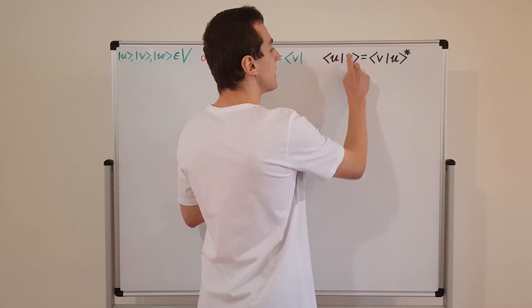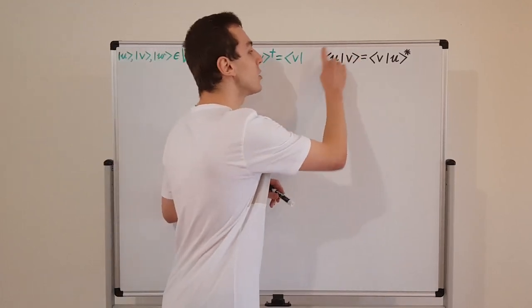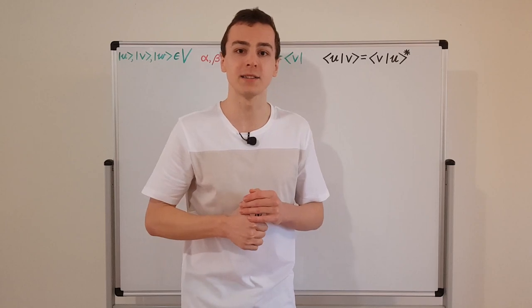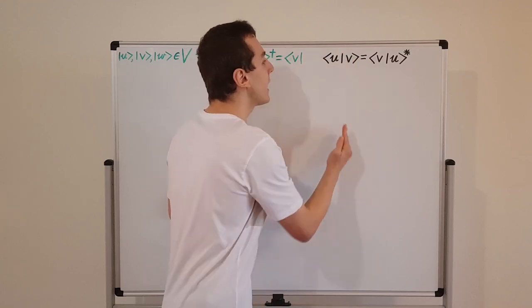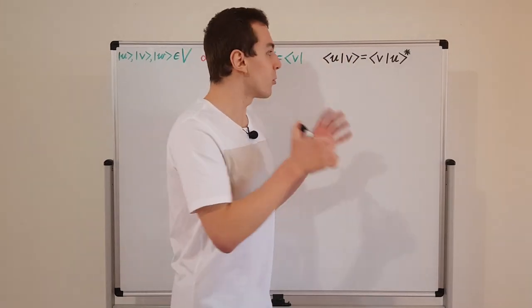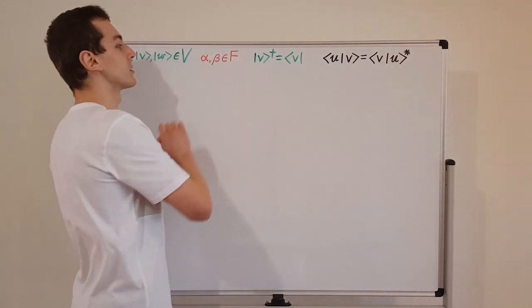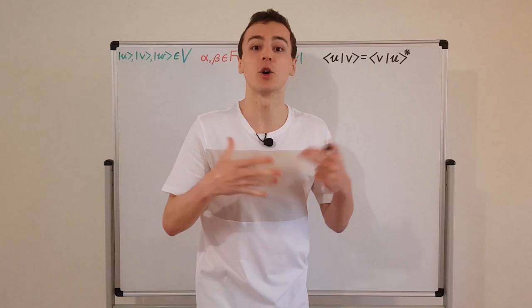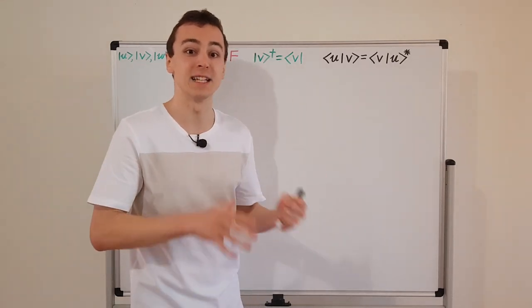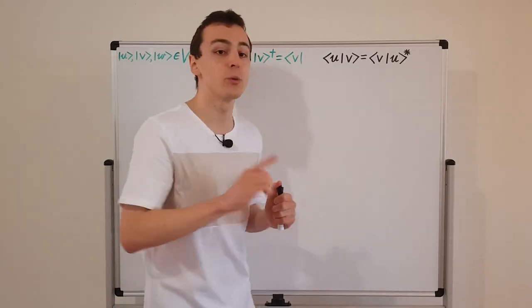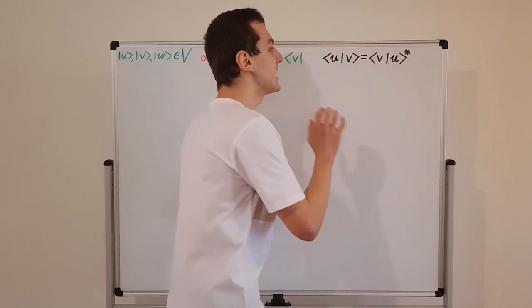In Dirac notation, we have a ket on the right and a bra on the left — this bra-ket combination denotes the inner product. In pure mathematics, you might see different bracket styles with a comma instead of a vertical line, but what's important is that we combine two vectors and get an output which is a member of the field — a complex or real number, not a vector. So the inner product does not produce another vector; it produces a scalar.